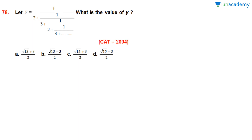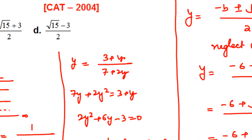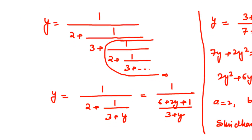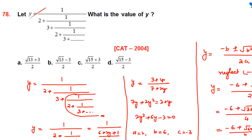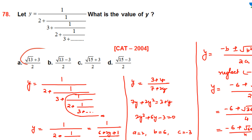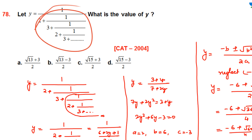Solution to Question 78: This is an infinite series question. First, observe the options — our answer must be less than 1, since y = 1/(something) is always less than 1. Options A and C involve (√13 + 3)/2 ≈ (3.6 + 3)/2 ≈ 3.3, which is greater than 1. So options A and C are eliminated, leaving only B and D as possibilities.